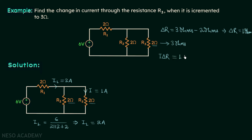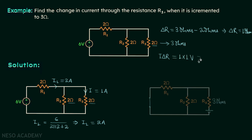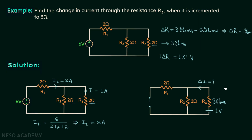I·delta R equals 1 multiplied by 1, which gives 1 volt. So the voltage source to be added in series with the new R3 has a value of 1 volt. The 6-volt source has been turned off and replaced by a short circuit. Now you can find the incremental change in current delta I — and this is your homework problem. Find delta I and once you have your answer, post it in the comment section.